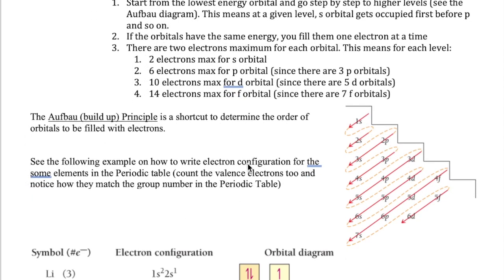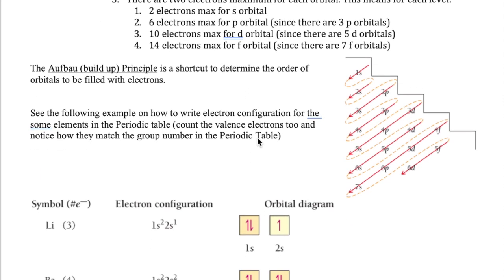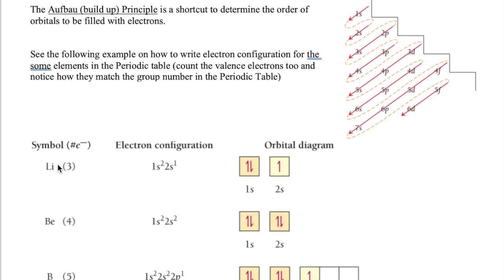Now that we've learned the rules, we'll apply them with examples, starting with lithium, which has only three electrons. We start by putting electrons in the 1s orbital, as the Aufbau diagram tells us. The 1s orbital can have a maximum of two electrons, so we write 1s². Since that maxes out, the third electron goes into the next orbital — the 2s — giving us 2s¹. So the electron configuration for lithium is 1s² 2s¹.